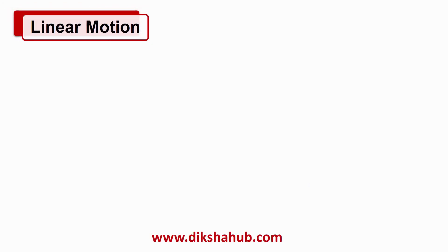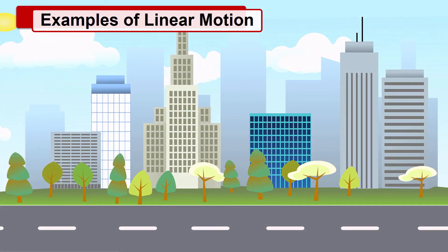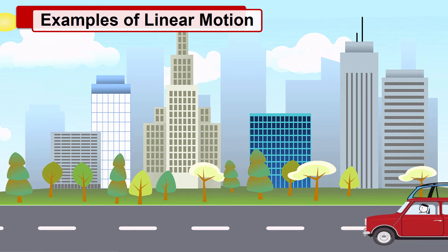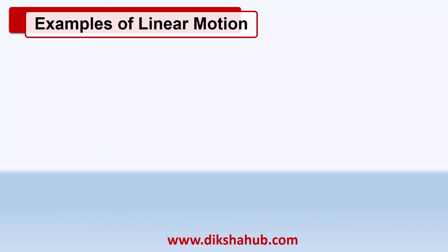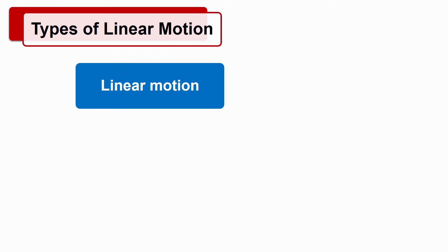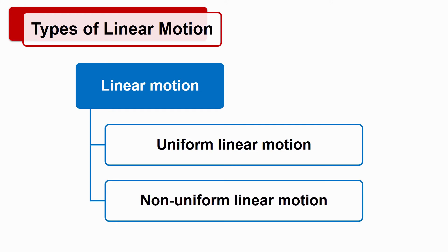The first type of motion is linear motion. If an object is displaced in a straight line, then it is called the linear motion of the object. Examples: vehicles on a road travelling in a straight line, and if you stand on a chair and release a ball from your hand, it falls on the floor — this motion of the ball is linear. There are two types of linear motion: uniform linear motion and non-uniform linear motion.